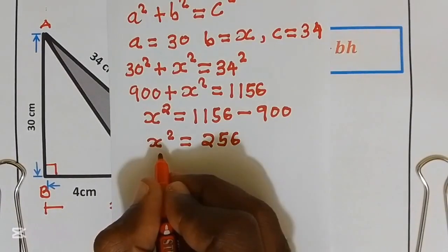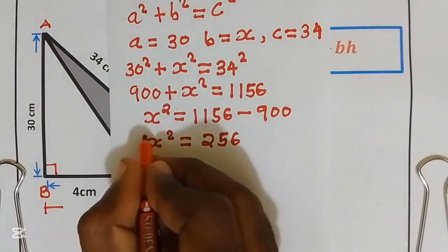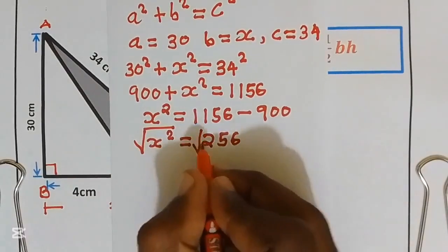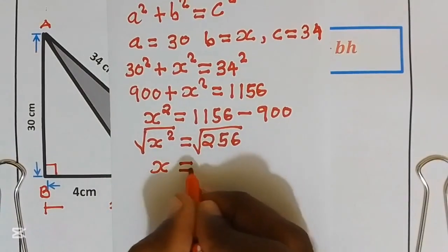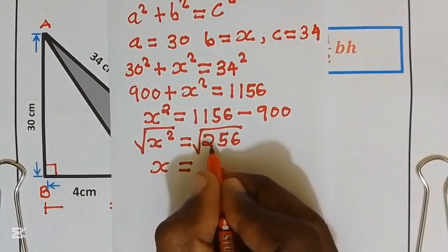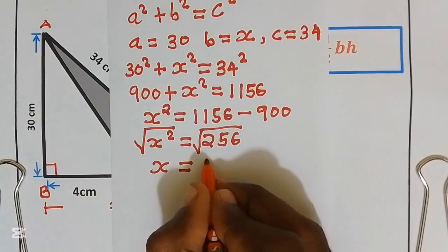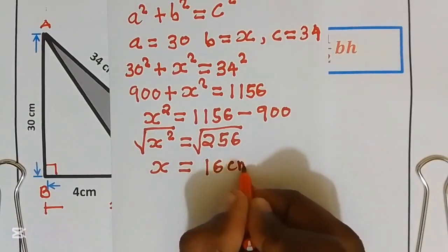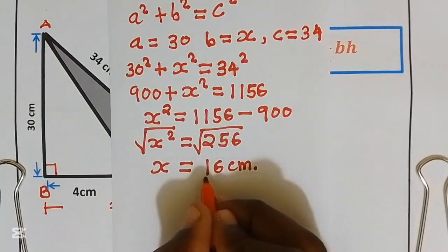Take the square root of both sides. We get X equals the square root of 256, which is 16. This is going to be centimeters. Since this is a distance, we don't take the negative part, only the positive part.